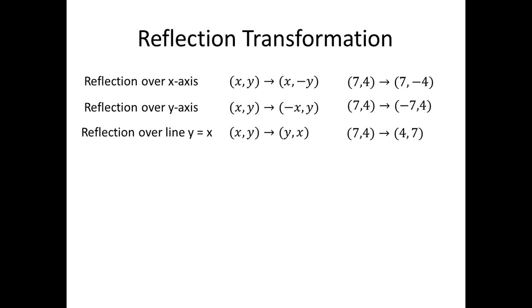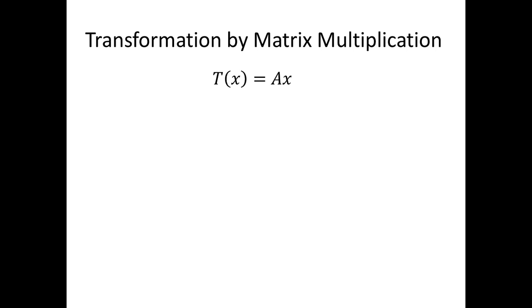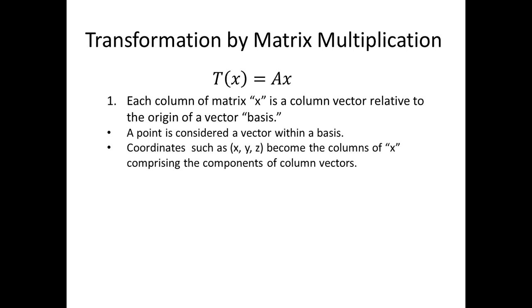Now we look at reflection transformations and the coordinate rules for those. These are handled by matrix multiplication, where the transformation equals a matrix A times the vector x. Each column of matrix x is a column vector relative to the origin of a vector basis. We're starting to think of coordinates more as vectors relative to an origin in a vector basis, which describes how points in space are measured. Coordinates such as x, y, z become columns of the x vector, comprising the components of column vectors, and those are the ones that are going to be transformed.